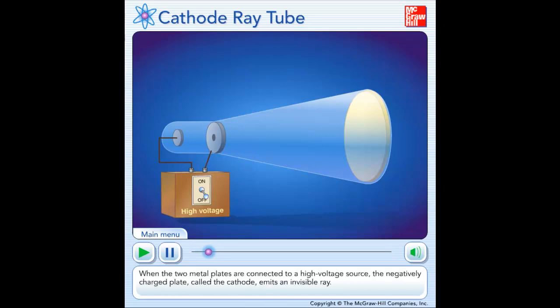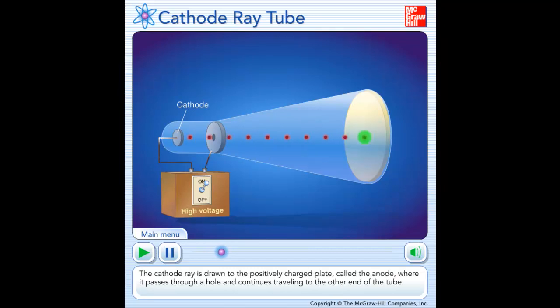When the two metal plates are connected to a high voltage source, the negatively charged plate, called the cathode, emits an invisible ray. The cathode ray is drawn to the positively charged plate, called the anode, where it passes through a hole and continues traveling to the other end of the tube.